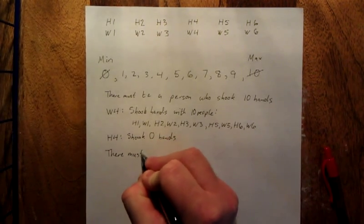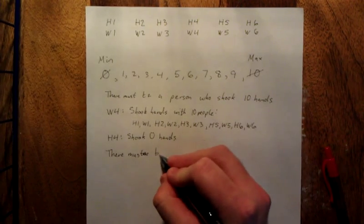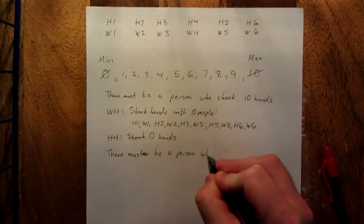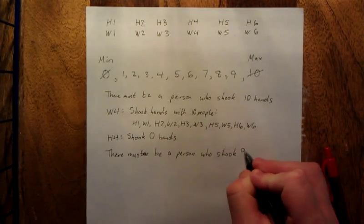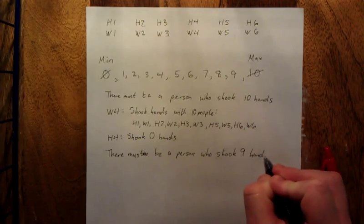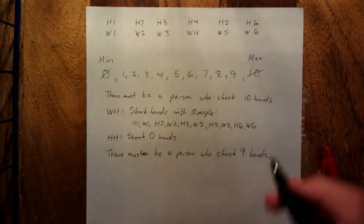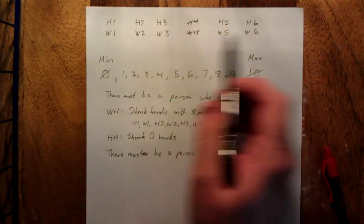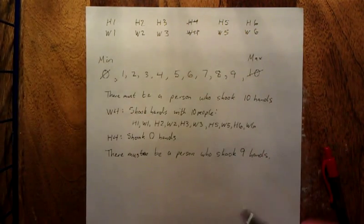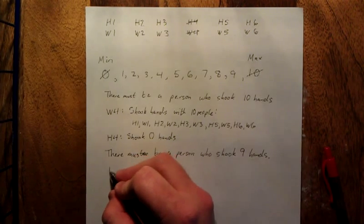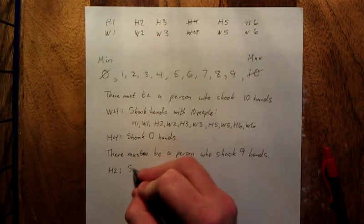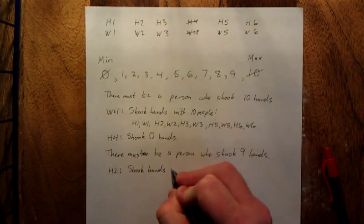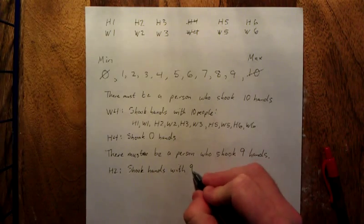However, I'm going to work my way down. There must be a person who shook nine hands. So without loss of generality, we've already taken care of husband four and wife four. One of these other people must have shaken nine hands. Without loss of generality we'll just say it was husband number two.